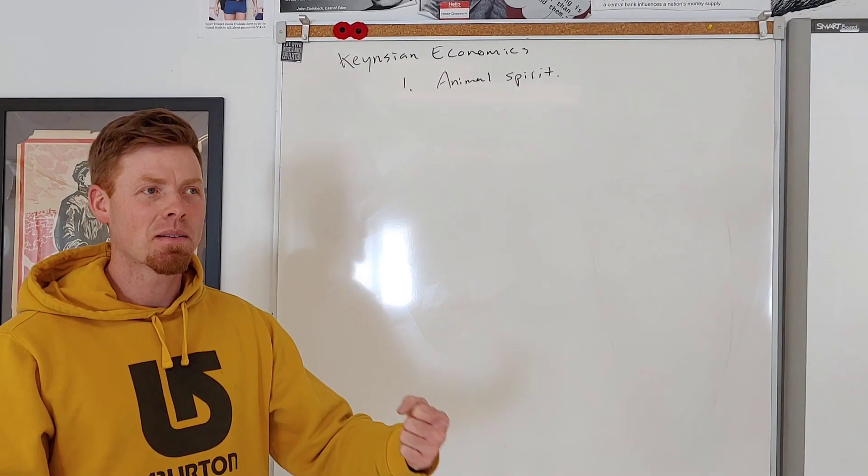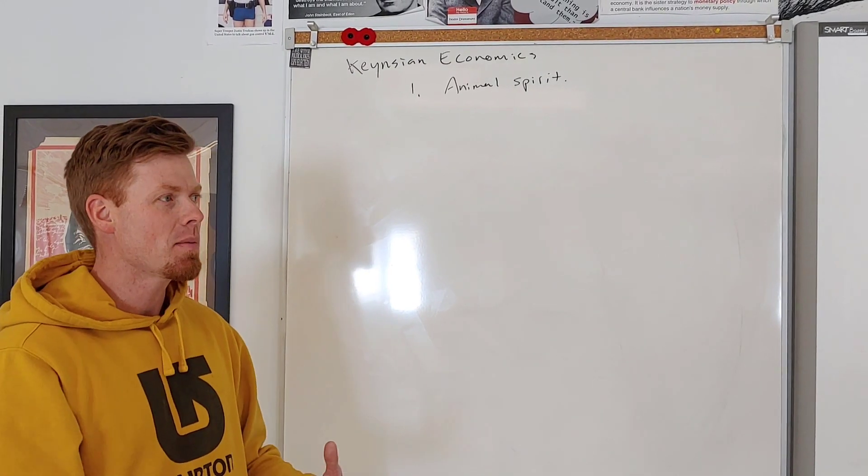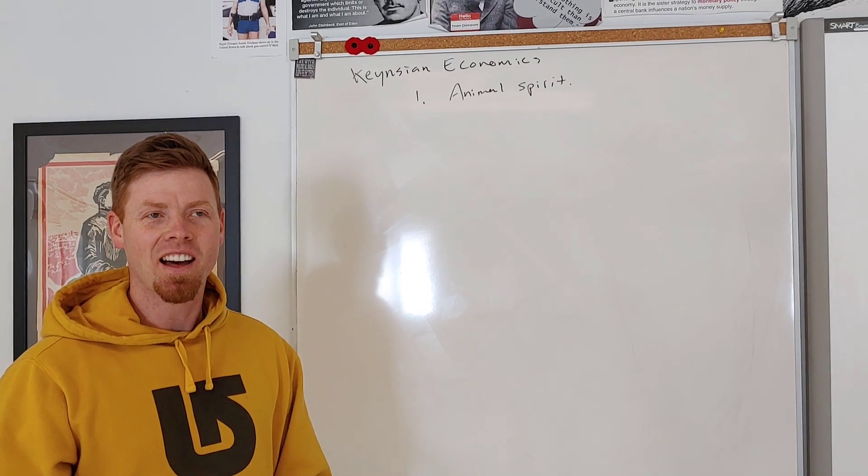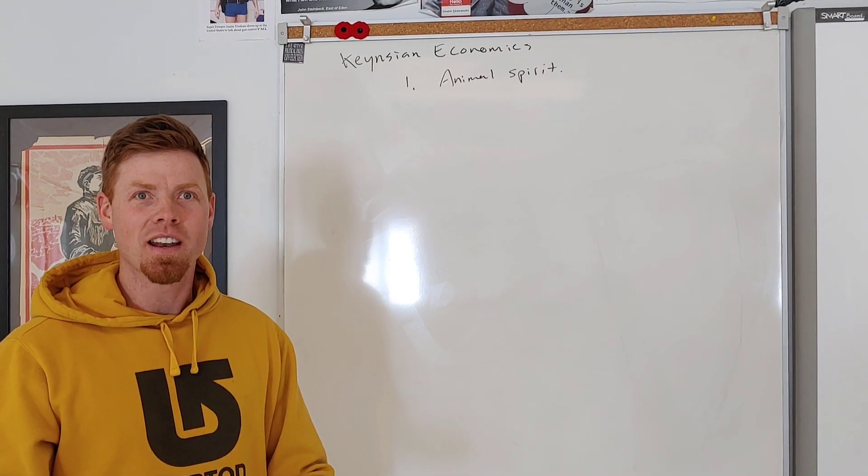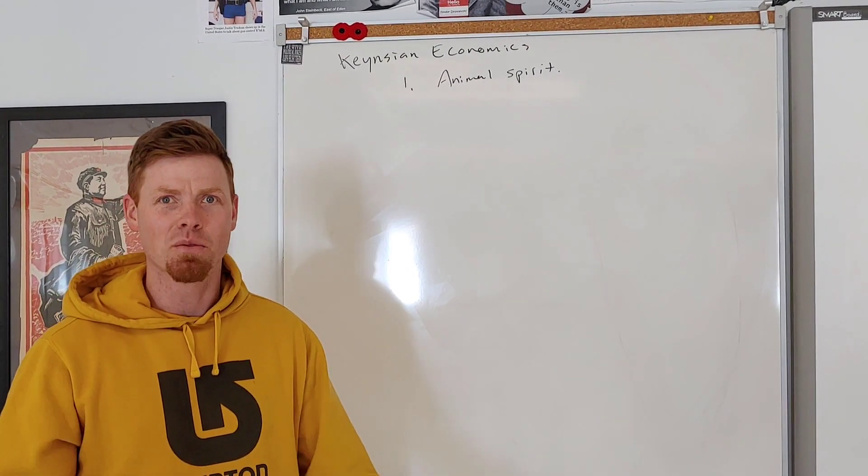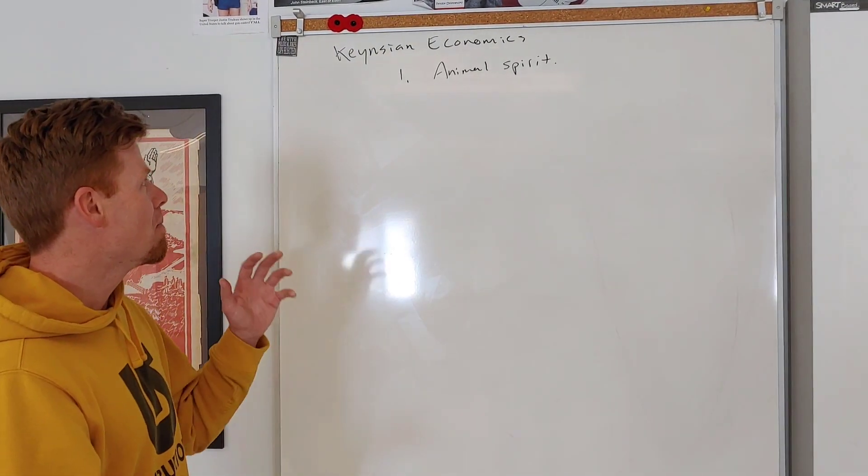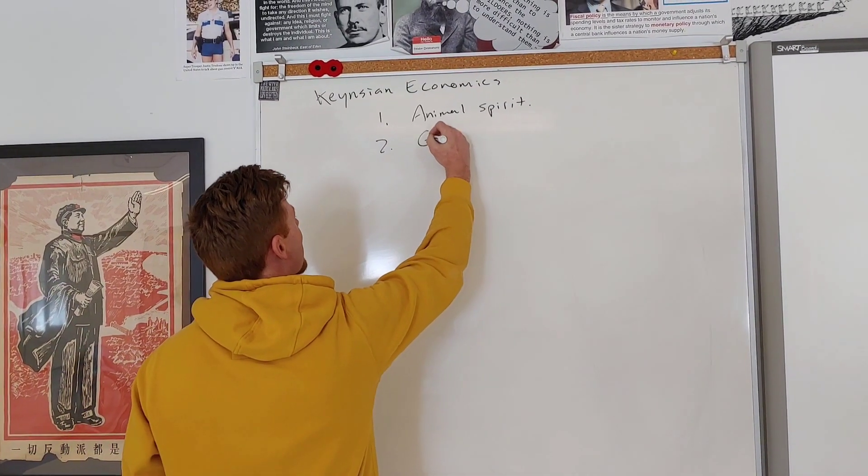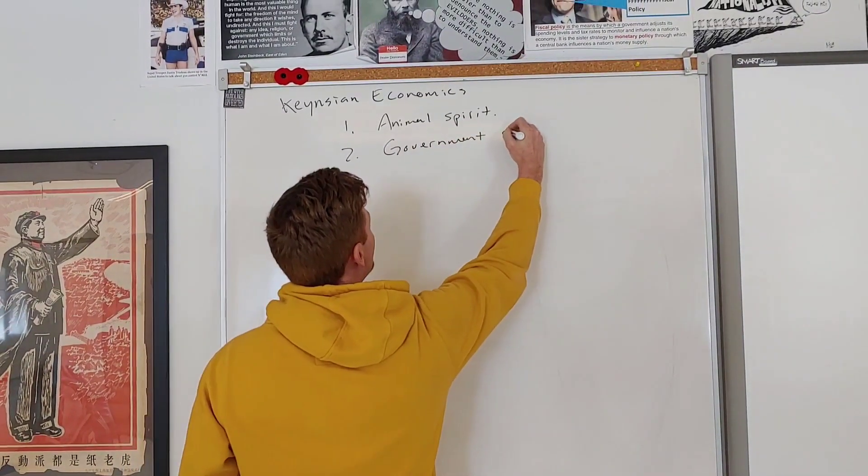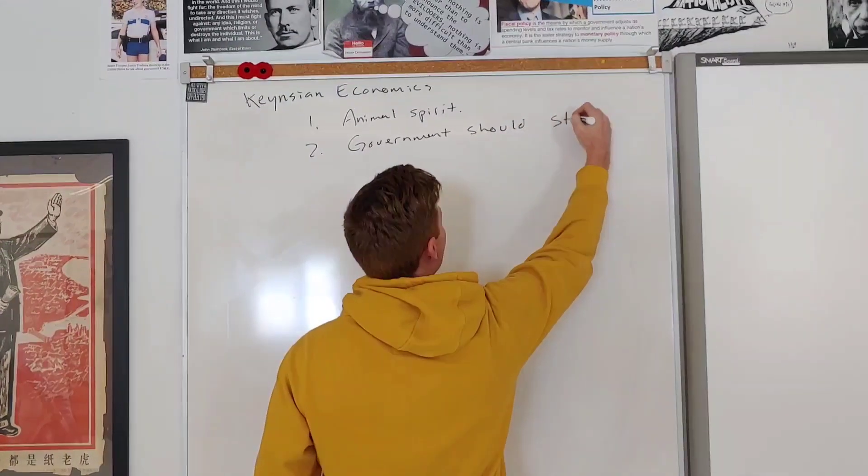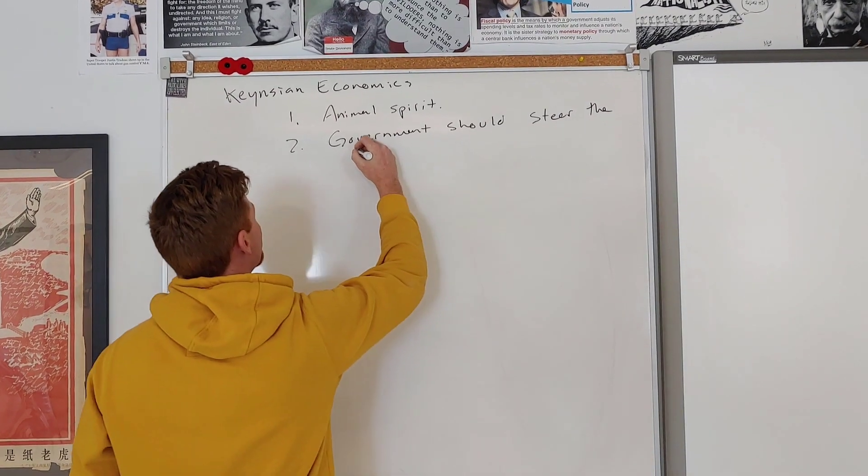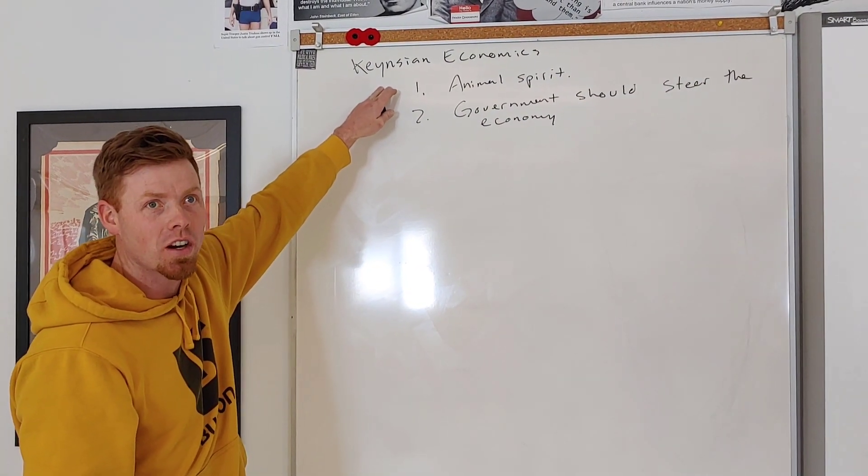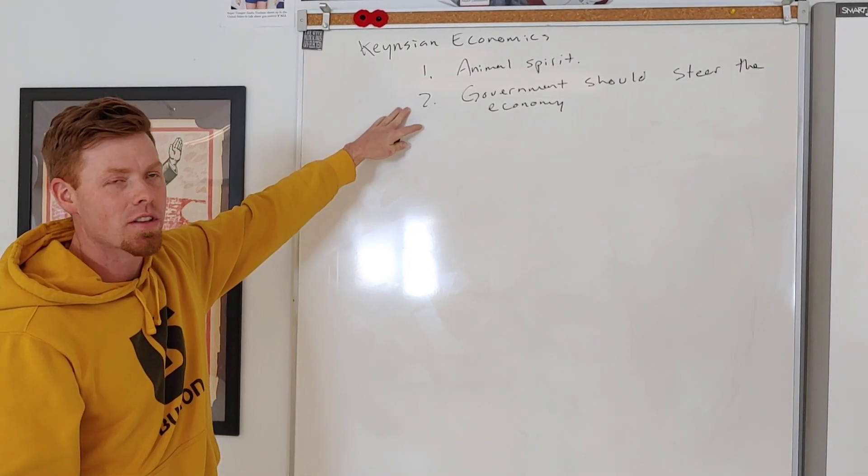So when the economy is driven by people, it's kind of like the way a deer responds when you're going to hit it with a car and just stares at you or acts irrationally. It doesn't really think about its future. So he believes that the economy should not be driven by people, but the economy should be driven by government. The government should steer the economy. He believes that people are irrational with their money and shouldn't be in charge of their money. Government should take more control over the economy itself.